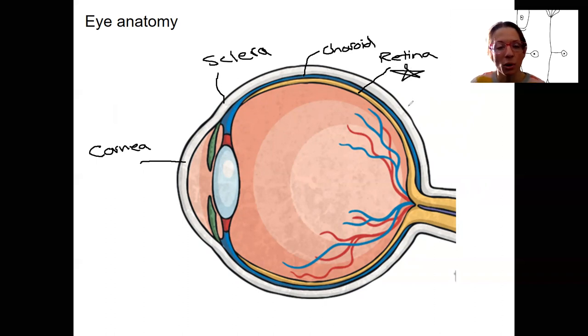So those are the layers. We also have some other important structures here. So light's going to be coming in. It's my little light symbol from the external environment. It's going to pass through this region right here. What do you think this hole is? I'm not talking about this big thing here. I'm talking about this hole.